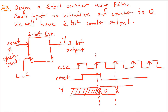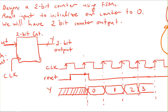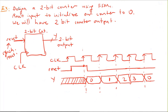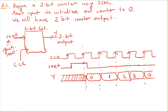On the next clock edge the output will be one — it is counting. On the following edges the value changes to two, then three, then back to zero, because a two-bit counter counts from zero to three and wraps around. Looking at this timing diagram, we can identify four different states.